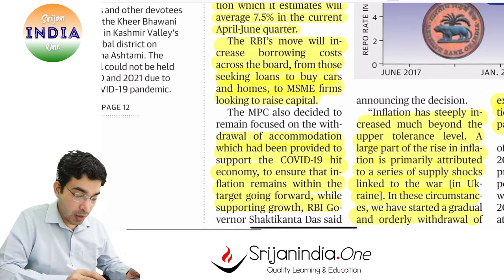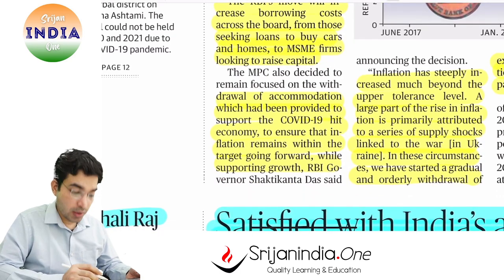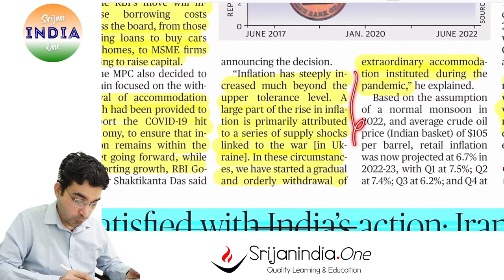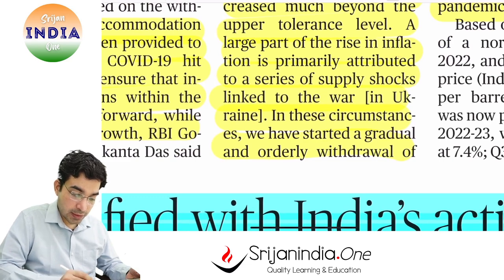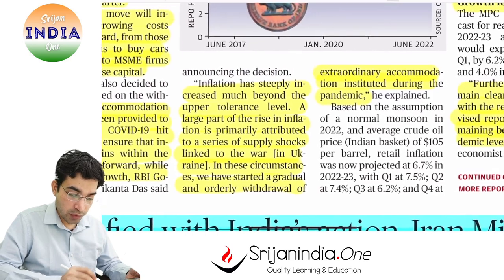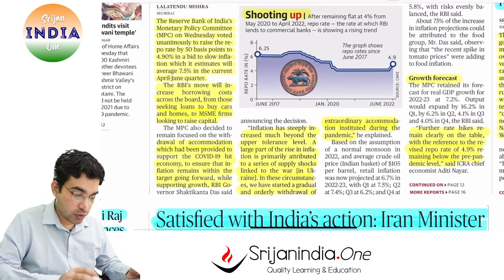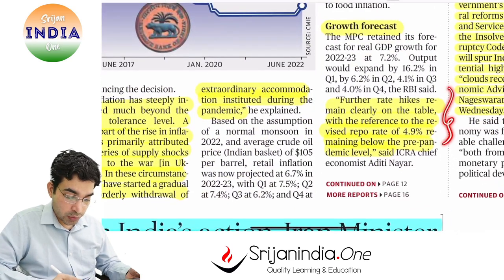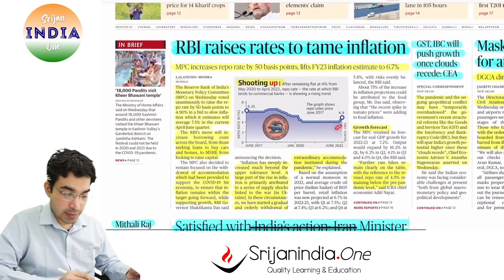Borrowing costs will now increase — loans will become expensive, and firms will find it difficult to raise capital. The monetary policy is moving from accommodative to tighter. Inflation is rising sharply; primary reasons include the war in Ukraine causing supply shocks, and COVID-19 lockdowns. RBI has started gradual and orderly withdrawal of extraordinary accommodative measures instituted during the pandemic. Because of inflation, GDP growth forecast will also be impacted.